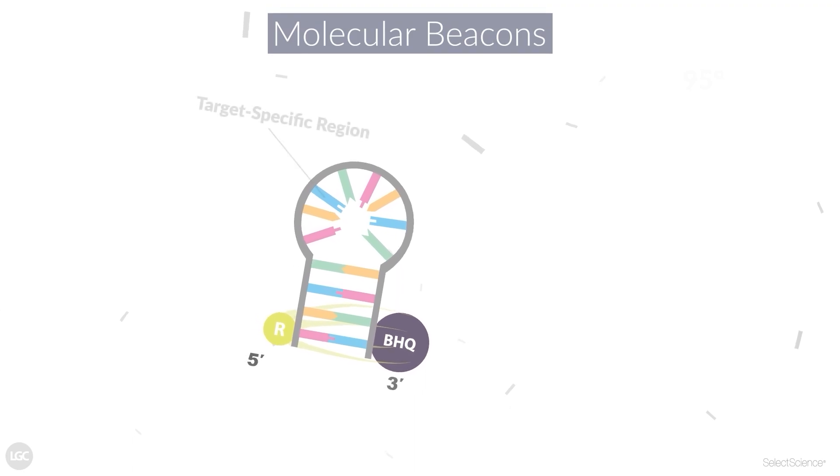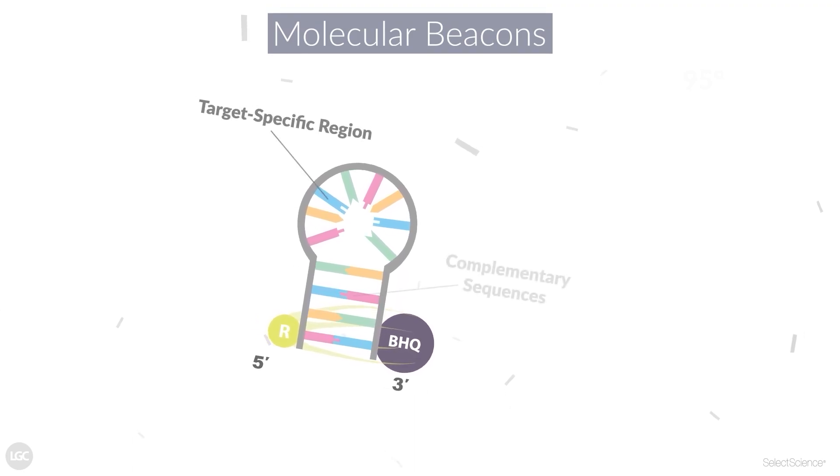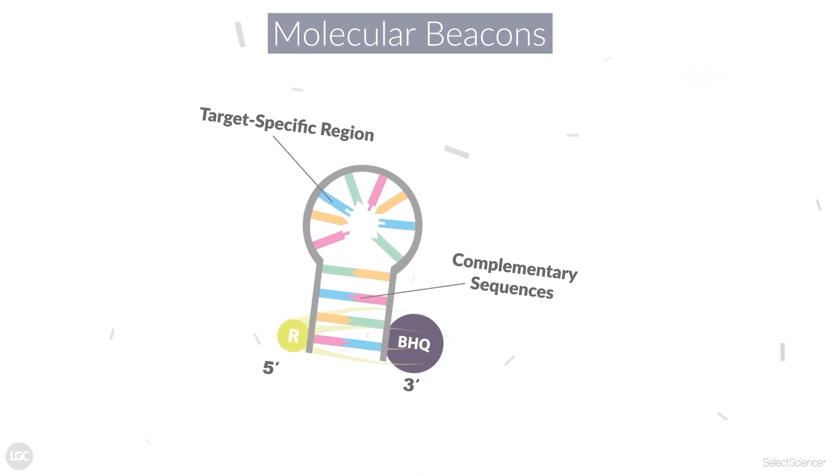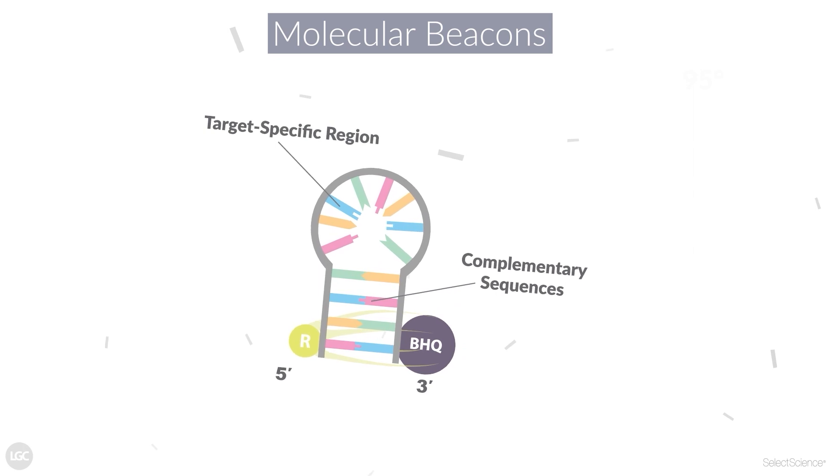Molecular beacons form a stem loop structure as a result of complementary sequences at the 5' and 3' ends and a target specific region in the center which forms the loop.